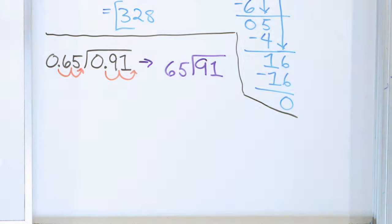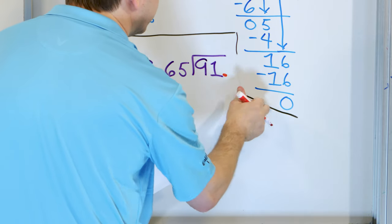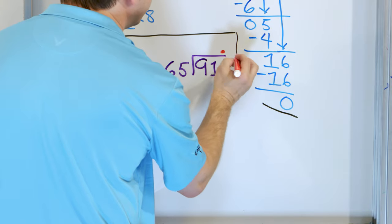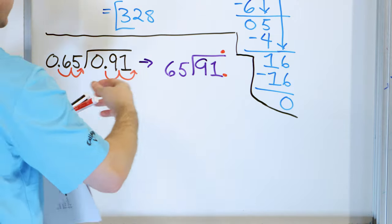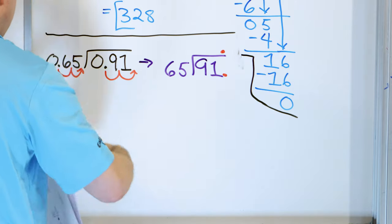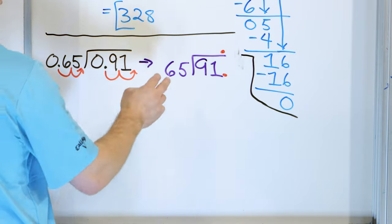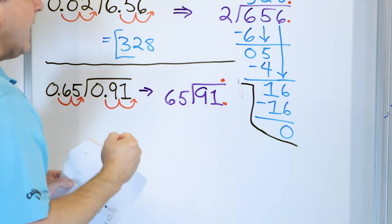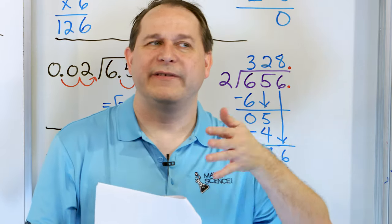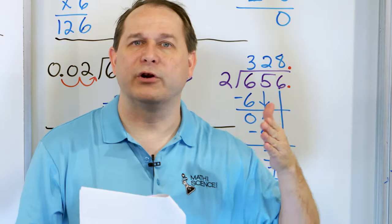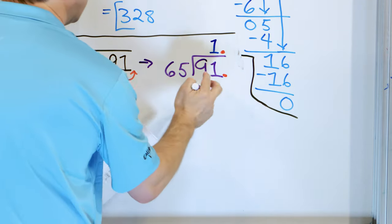First thing: we look on the outside and move the decimal two positions, which means we move the inside two positions also to keep it balanced. So we're really going to solve a related problem: 91 on the inside divided by 65 on the outside. Next we notice there's an invisible decimal right here, so the answer will have an invisible decimal there as well. 65 can go how many times into 9? It can't — too small. How many times can it go into 91? It can't go two times because 65 is close to 60, and 60 times 2 is 120 — way bigger than 91. So it has to go only one time.